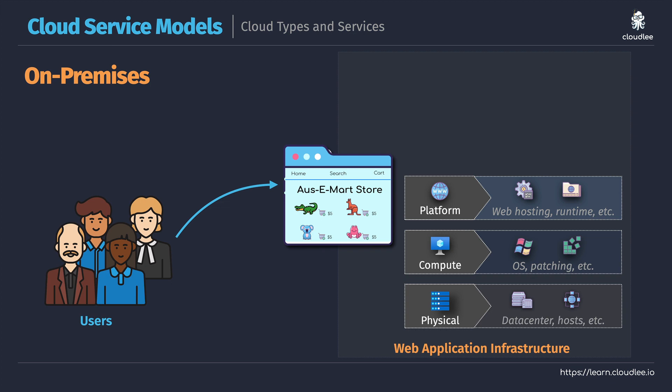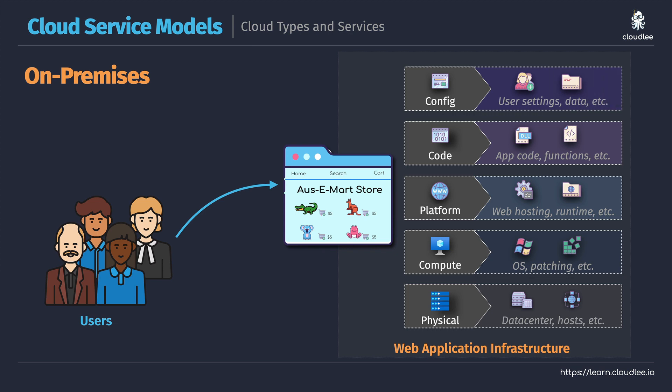To actually have that web application work, we'll need some sort of platform. For Windows, that might be the web server role, such as IIS or ASP.NET, or for Linux, that might be Apache or NGINX — web hosting capabilities. For this Ozymart web store, we're also going to have the code. We can develop that in whatever language suits our purpose, providing features and functionality. Once the web application is up and running, we'll need to manage it — operations teams and developers managing physical through to code, and application administrators managing user settings, data, and access to different features.